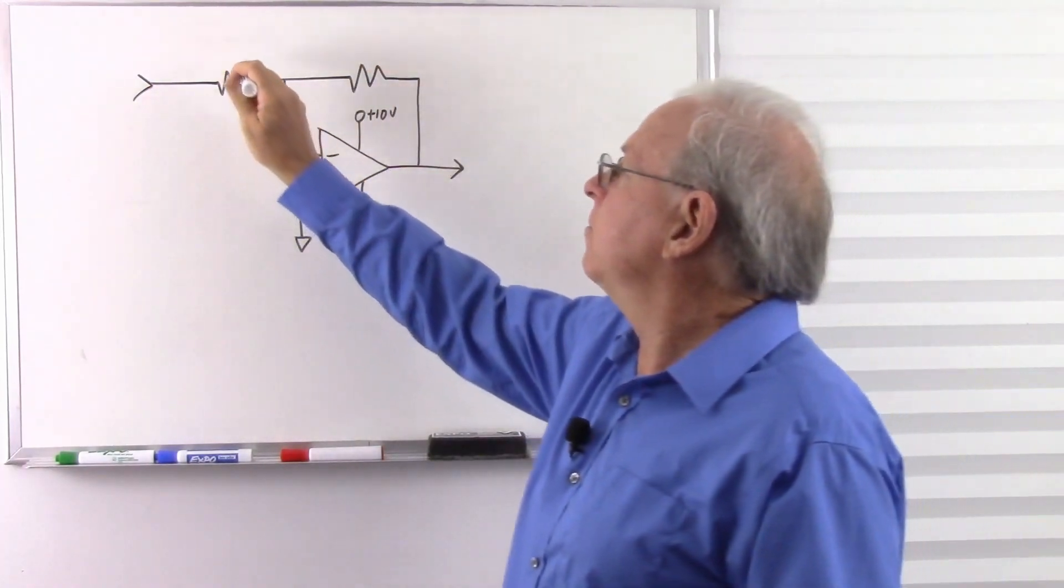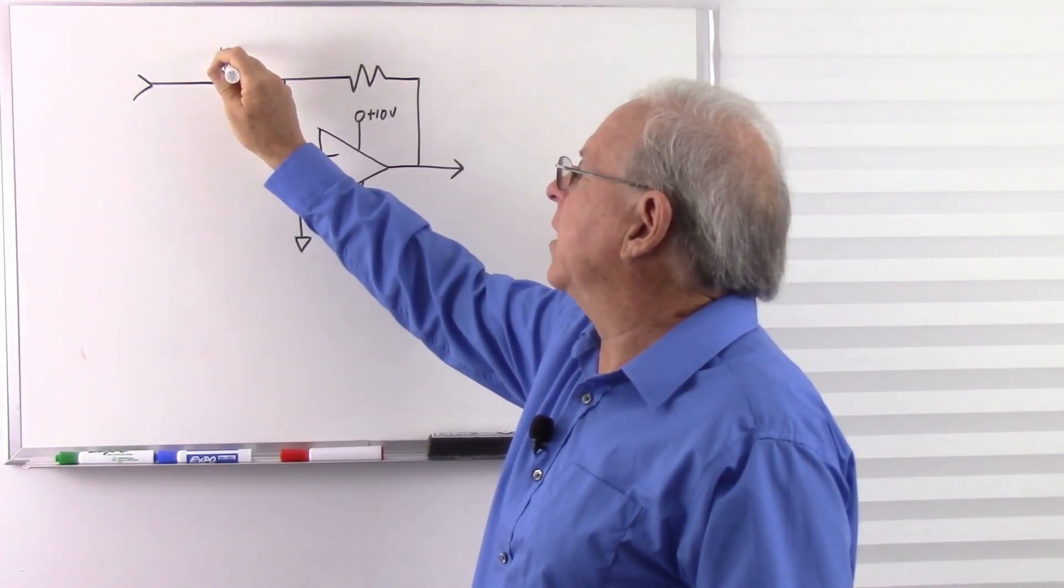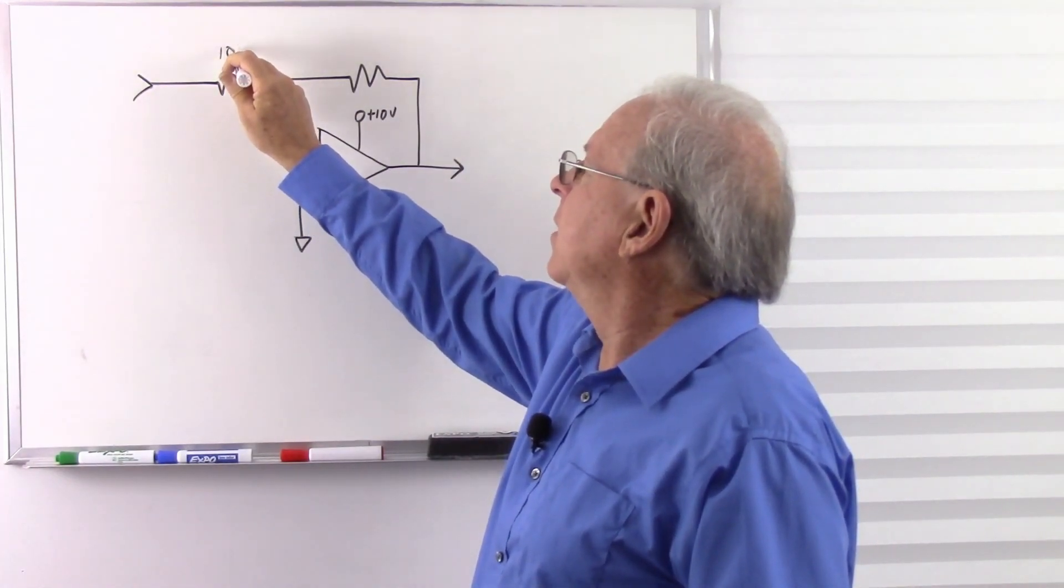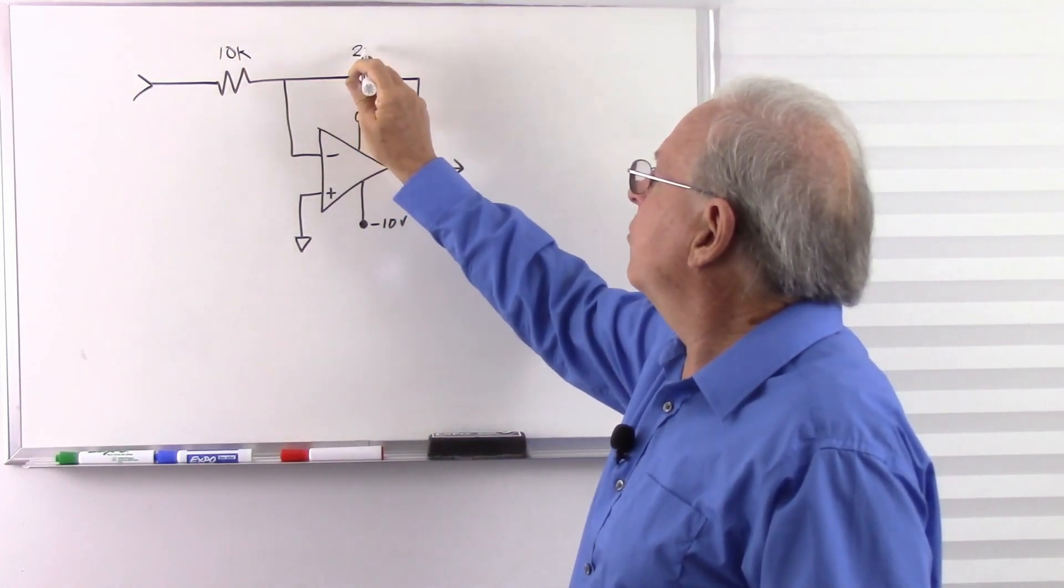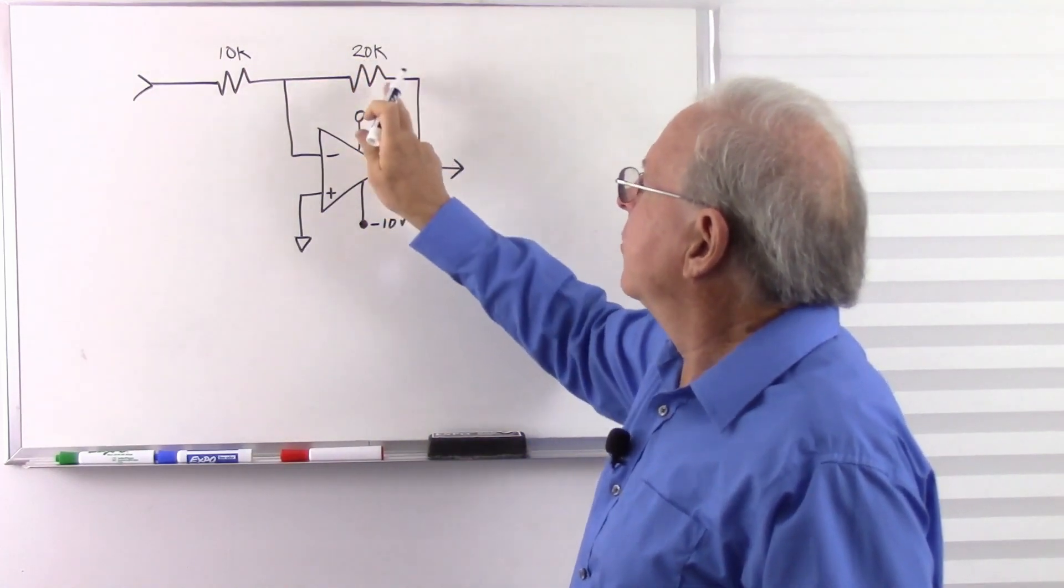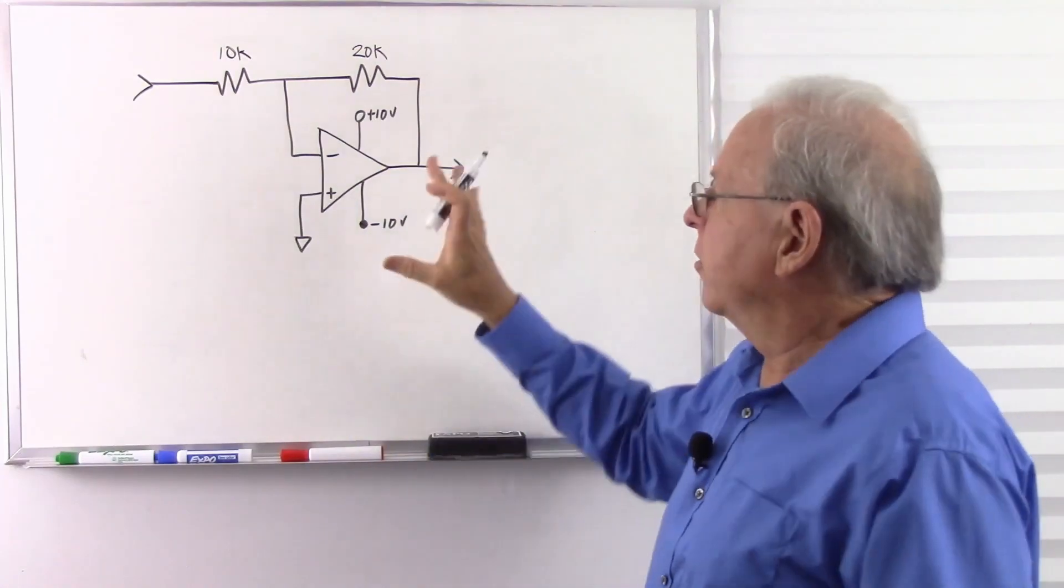Let's make this a practical circuit. I'm going to give it a gain of 2 by making a 2 to 1 ratio of these resistors. So that's one reason that this circuit is popular.